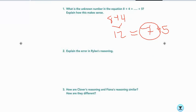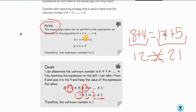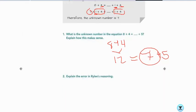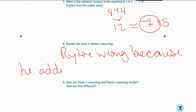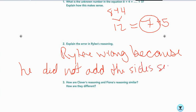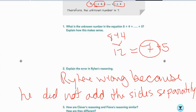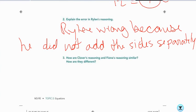Okay? So what was Riley's error? So if we go back to where Riley was, Riley's error is right here. Riley's error is that he didn't add his side separately. He did what they do in elementary school. So Riley is wrong. Riley is wrong because he did not add the sides.